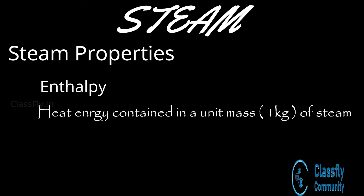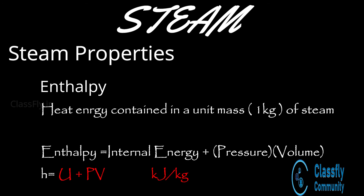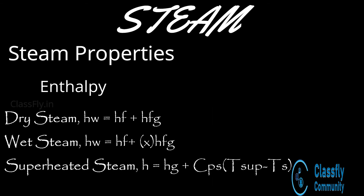Enthalpy of steam is defined as the amount of heat energy contained in a unit mass of steam. It can also be expressed as the sum of internal energy and the product of pressure and volume of the steam, expressed in kilojoules per kg. For dry steam it is denoted by hf + hfg; for wet steam by hf + x·hfg; and for superheated steam by hg + cps·(T_sup − Ts), where hf is the sensible heat, hfg is the latent heat, x is the dryness fraction, hg is the total enthalpy of the dry steam, T_sup is the superheat temperature, Ts is the saturation temperature, and cps is the specific heat of superheated steam.